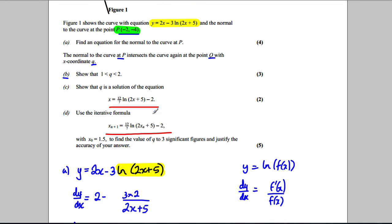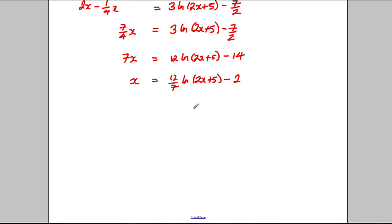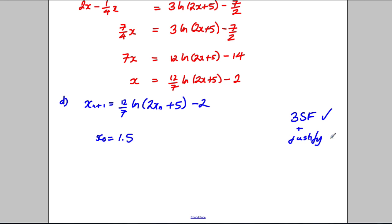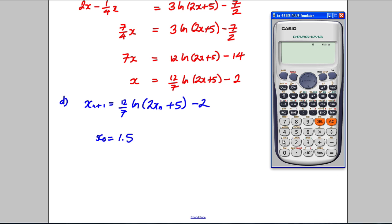Lastly, show that the iterative formula — which is just this made into an iteration — starting with x₀ = 1.5, to find the value of Q to 3 significant figures and justify accuracy. For part D, the iterative equation is x_{n+1} = (12/7)ln(2x_n + 5) - 2, starting with x₀ = 1.5. We want to get right to 3 significant figures and justify. So let's do this on the calculator — type in 1.5 equals, which stores 1.5 in the answer function.